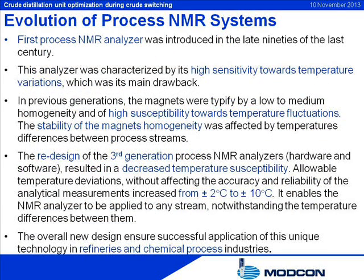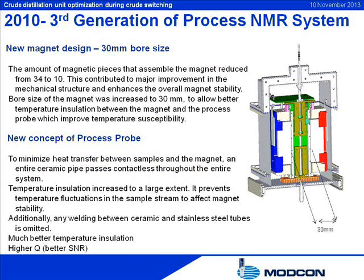The first process NMR analyzer was introduced in the late 1990s. This analyzer was characterized by high sensitivity towards temperature variations, which was its main drawback. In previous generations, the magnets were typified by low to medium homogeneity and high susceptibility towards temperature fluctuations; the stability of the magnets' homogeneity was affected by temperature differences between process streams. The redesign of the third-generation process NMR analyzers' hardware and software resulted in decreased temperature susceptibility. Allowable temperature deviations without affecting accuracy and reliability increased from ±2°C to ±10°C, enabling the NMR analyzer to be applied to any stream notwithstanding temperature differences between them.